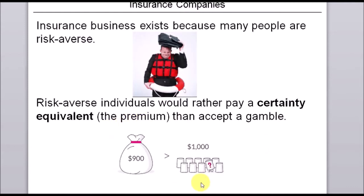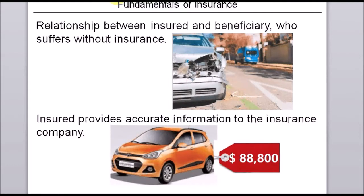If an insurance company is able to charge $150 to take that risk off of their clients, and if they have a lot of clients, then the insurance company would be able to cover all claims from roughly 1% of clients who do have losses, with some money left to cover the cost of running the business. So risk aversion is what allows insurance companies to exist.